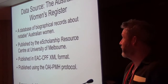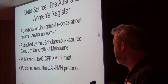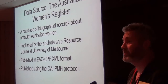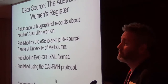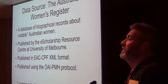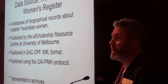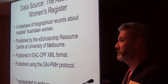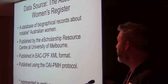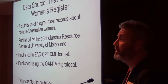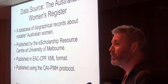This is the data source that's being visualized: the Australian Women's Register. It's a data graph of biographical records about multiple women — people who have had archives about them either because they themselves were artists, politicians, or writers, or they're famous enough to have had people writing about them and therefore they're represented in the archives. This dataset is published by the e-Scholarship Research Centre at the University of Melbourne and consists of about 5,000 XML records.